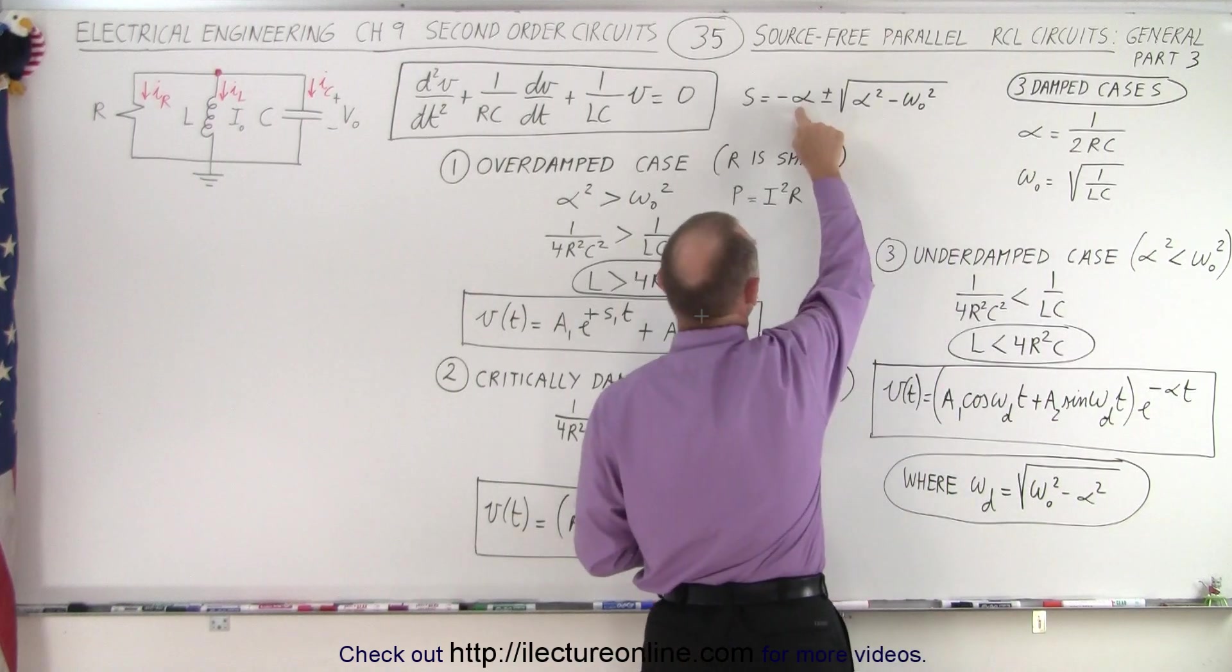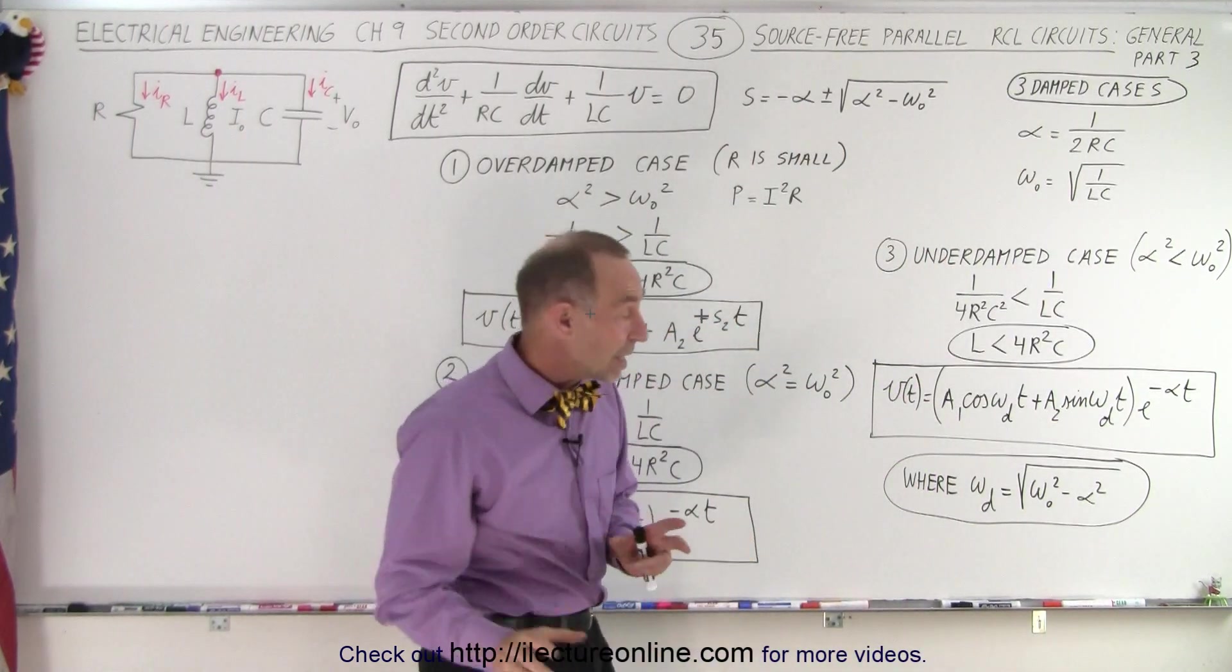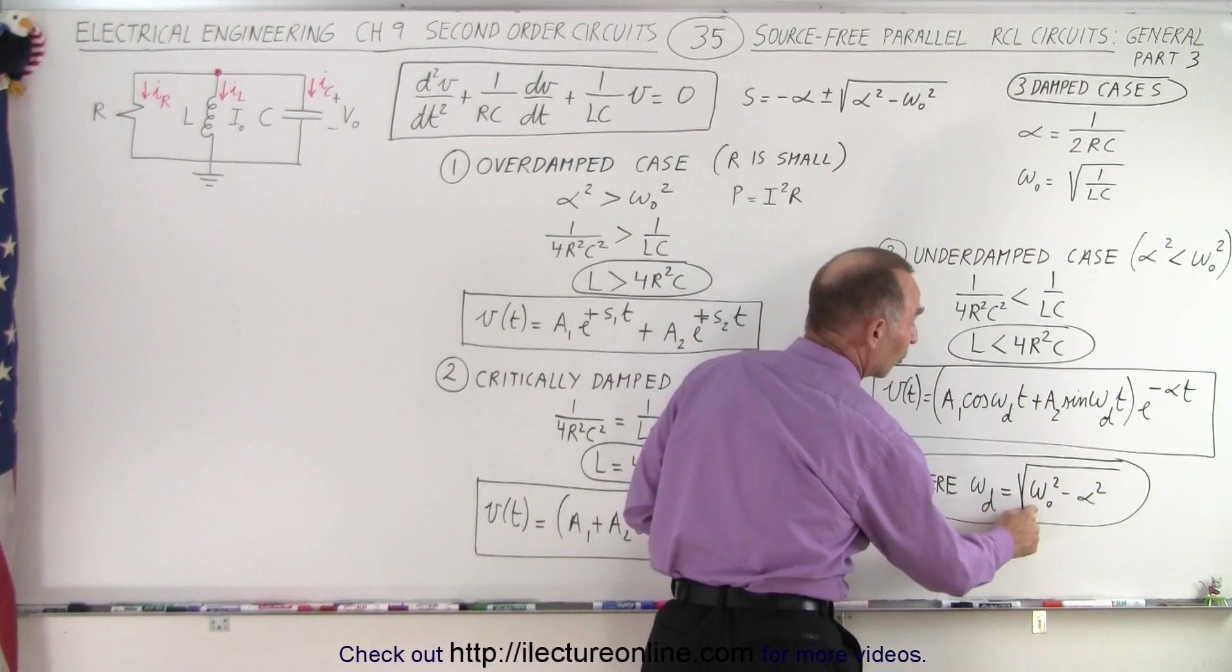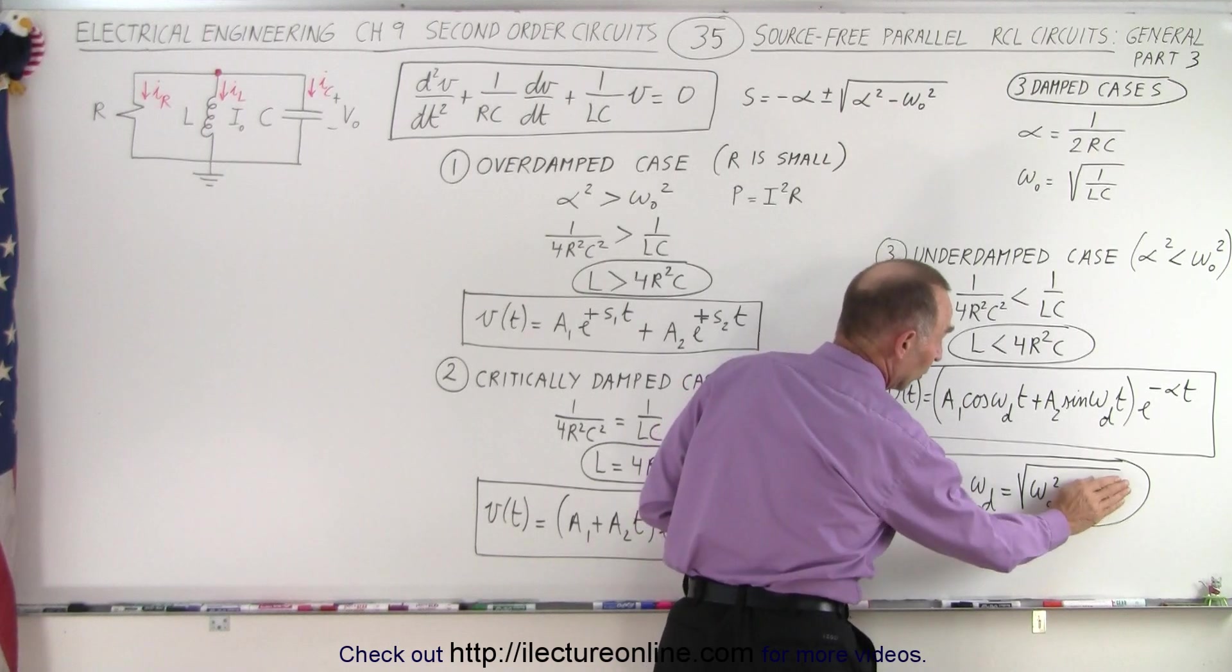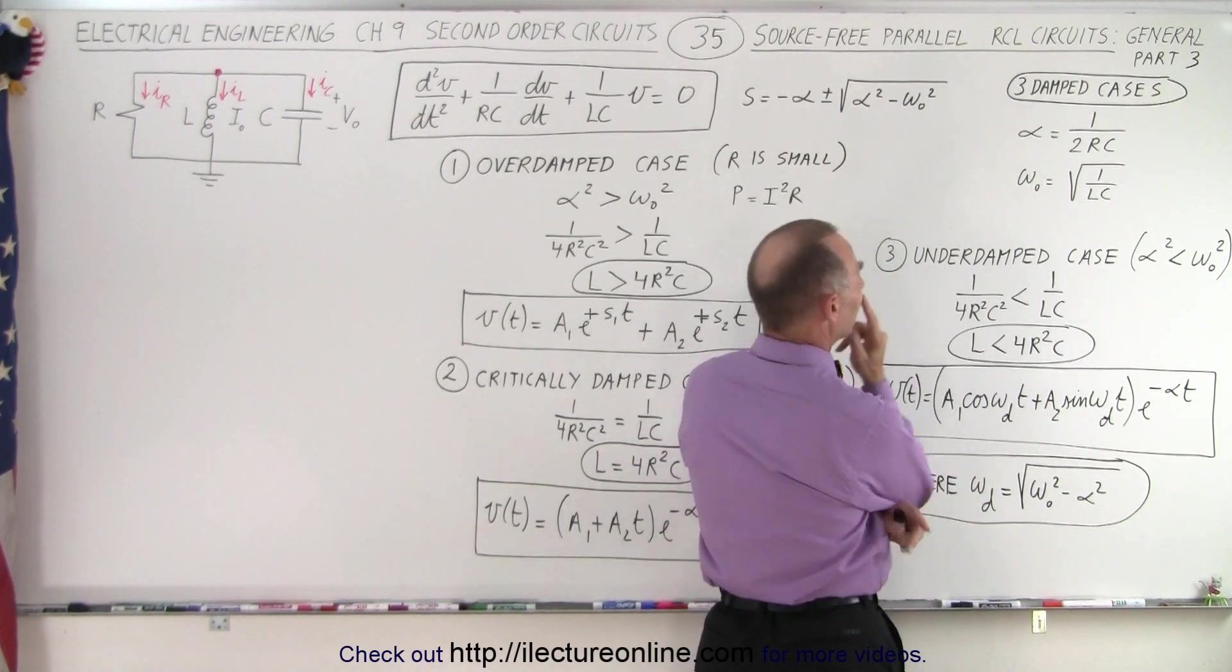Now, alpha, of course, is, again, the alpha that we calculated here, which is defined over here. Now, the damped frequency of the circuit is the square root of omega sub naught squared minus alpha squared. Again, when alpha goes to zero, well, when alpha goes to zero, when would alpha go to zero? Well, when r becomes infinite. When r becomes infinite,